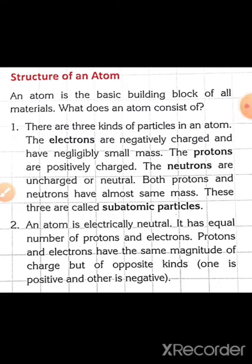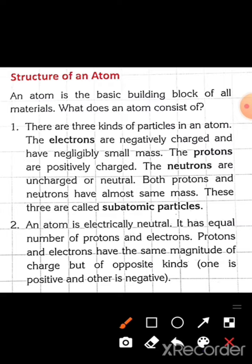Hello students. Today in this chapter on static electricity, we will discuss the structure of an atom. Every element is made up of tiny particles called atoms. These atoms are very very small. Atoms are made of smaller particles called subatomic particles. The center of every atom is called the nucleus, and the portion surrounding the nucleus is made up of energy levels called shells or orbits.